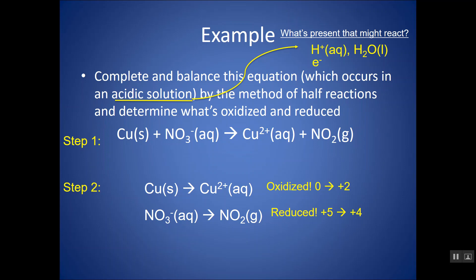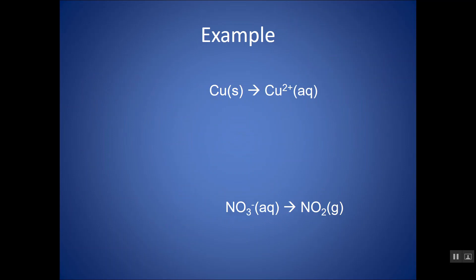Let's handle the copper half reaction first. Step three says to balance everything other than oxygen and hydrogen. There's one copper on the left and one copper on the right — copper is already balanced. I'm not looking at charge right now, just mass. The next step is to balance oxygen — there's no oxygen present, so I'll skip that. The next step is to balance hydrogen — there's no hydrogen present, so I'll skip that too.